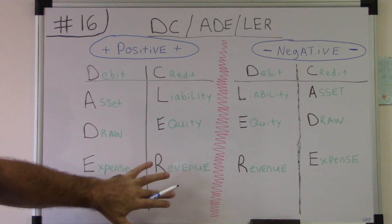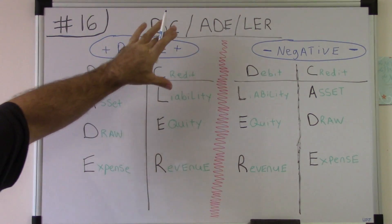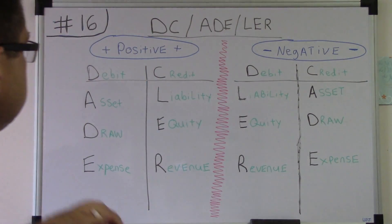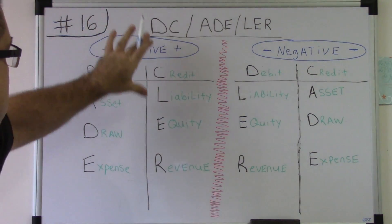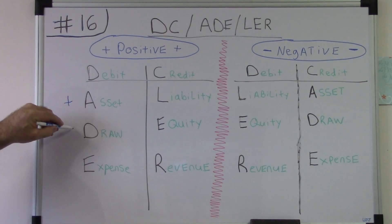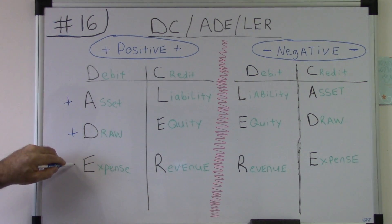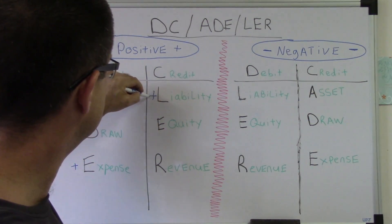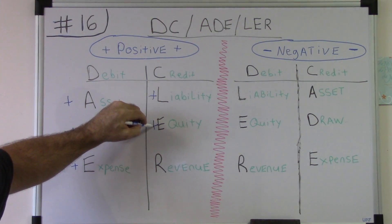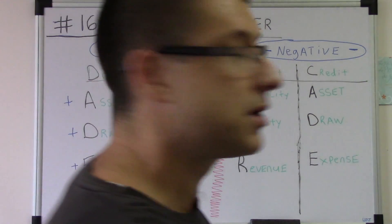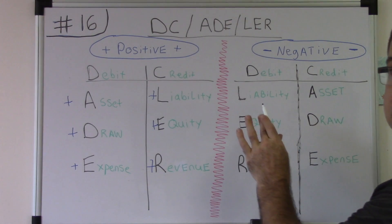This side here — asset going up, draw going up, expense going up, liability going up, equity going up, revenue going up. Now we're going to go over to the negative side.